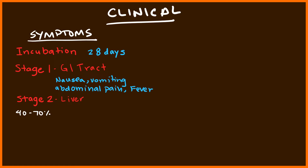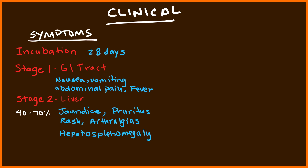These symptoms can be experienced for many reasons, so many patients will not think anything of it. If a patient is part of that 40 to 70% that moves on to liver symptoms, they'll get classic liver-type symptoms: jaundice, pruritus. They also develop a rash and arthralgia, which are due to any type of viral infection, and on clinical examination or imaging you will note hepatosplenomegaly.